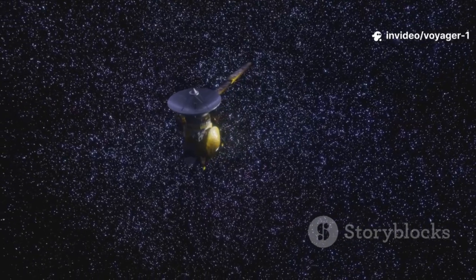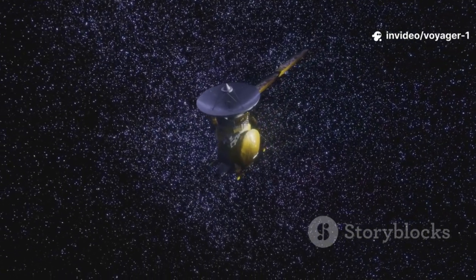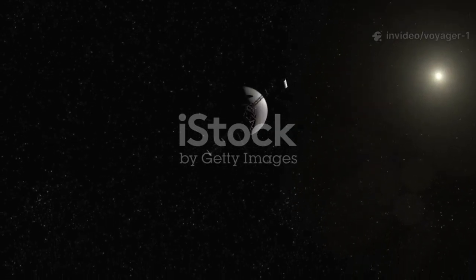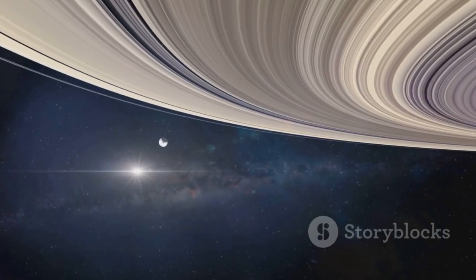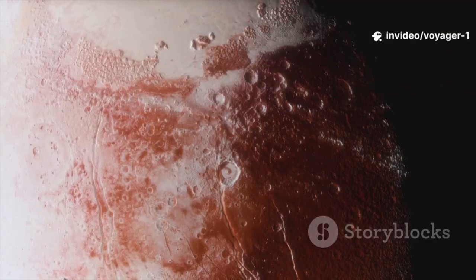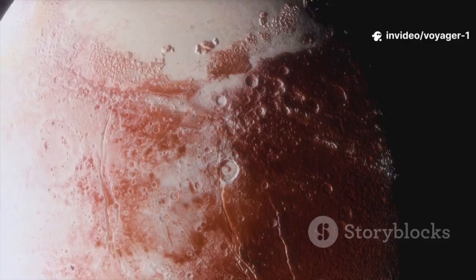For decades, Voyager 1 dutifully explored our solar system. It gave us breathtaking close-up views of Jupiter and Saturn. We saw swirling storms larger than our entire planet. We discovered volcanoes erupting on alien moons.